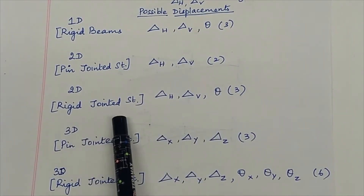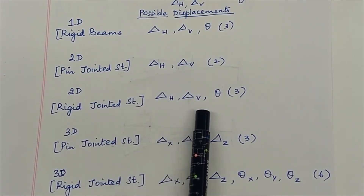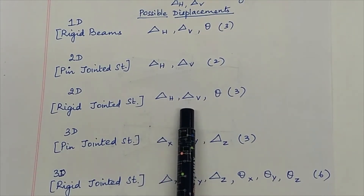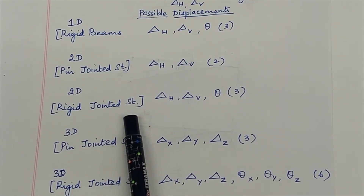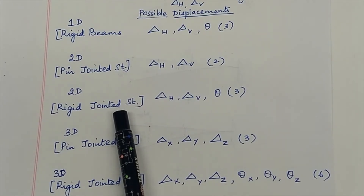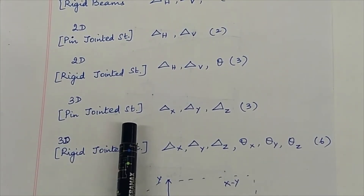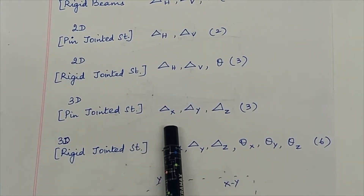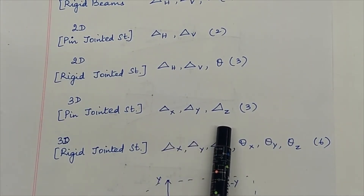For a rigid jointed structure, if it is a two-dimensional rigid jointed structure, there are three possible types of displacements: delta h, delta v and theta. An RCC structure is an example of a rigid jointed structure. Two-dimensional structures have dimensions in both directions, such as x-y, y-z, or x-z. Three-dimensional pin jointed structures, such as space trusses, have three types of translational displacements possible at each joint: delta x, delta y and delta z.